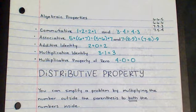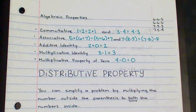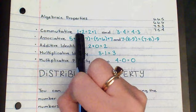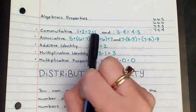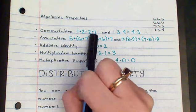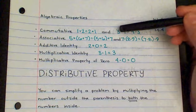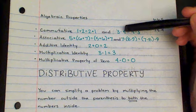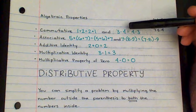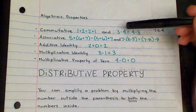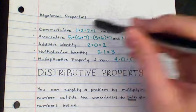This property does not apply to subtraction or division. If I substituted subtraction, 1 minus 2 would equal negative 1, while 2 minus 1 would equal positive 1, and negative 1 does not equal positive 1. Similarly for division, 3 divided by 4 gives three-fourths, while 4 divided by 3 gives 1 and one-third — obviously those are not equal either. So just addition and multiplication.